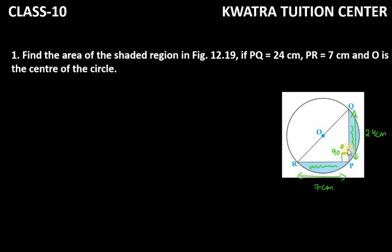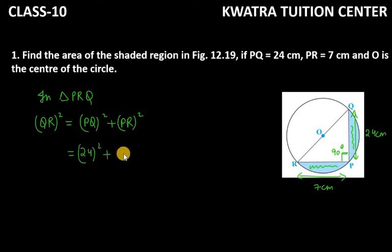The hypotenuse is QR, so QR² equals PQ² plus PR². That's QR² = 24² + 7² = 576 + 49 = 625. Therefore QR² equals 625.